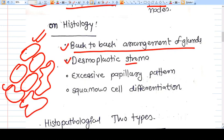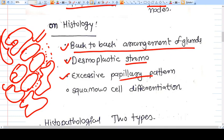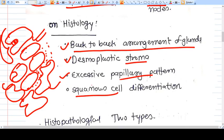Desmoplastic stroma - there are too many cells in the very less stroma. Excessive papillary pattern, this is the papillary pattern. For example, this is a gland, this is a papillary pattern. Squamous cell differentiation is also seen.